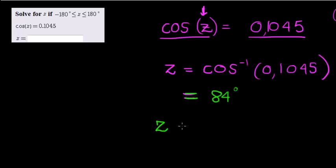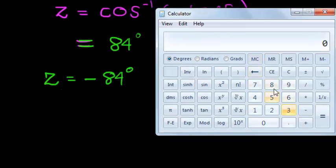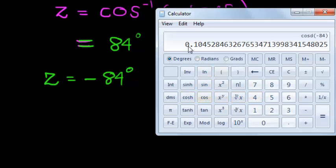As a matter of fact, z can also be negative 84 degrees. Let's try that, let's see if negative 84 works. If I put that into the cos, I get 0.1045.